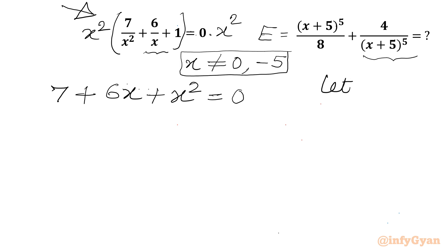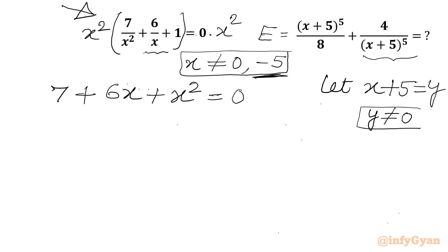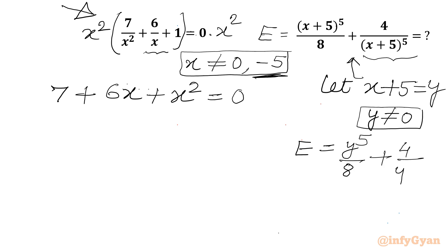Now I will assume x + 5 = y. Since x cannot be −5, we can write y ≠ 0. Applying this substitution to the expression, we get E = y⁵/8 + 4/y⁵. This is the expression we are going to evaluate.